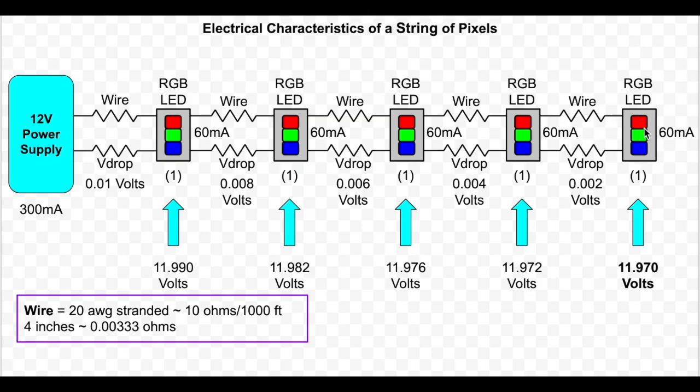The pixels are running at 100% intensity and each draw about 60 milliamps. The wire is standard 20 gauge with about four inch spacing. Wire has some resistance. That's why the wire is modeled as tiny resistors. The amount of current across the wire or resistor results in a small voltage drop. The voltage drop is accumulative the further you get away from the power supply.